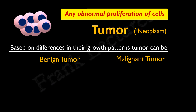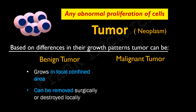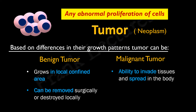If the tumor, or the multicellular mass, grows in a confined local area, it is known as a benign tumor — it remains confined to its original location. In this case, the tumor can often be removed by surgery or can be destroyed locally. But if the cells of the tumor have the ability to invade surrounding tissues, they can enter the bloodstream and invade other tissues, thus spreading to distant parts of the body. These types of tumors are known as malignant tumors. Such tumors are difficult to treat and become life-threatening.